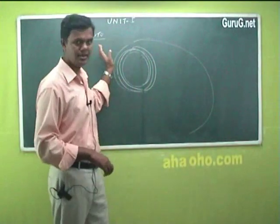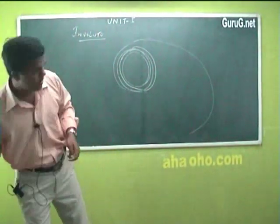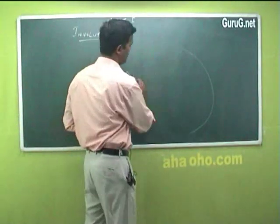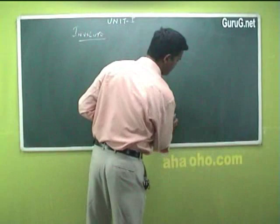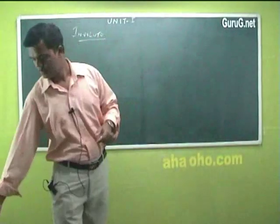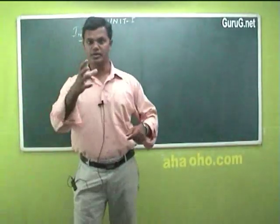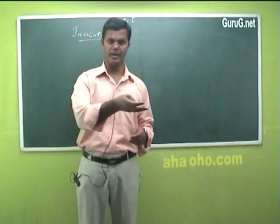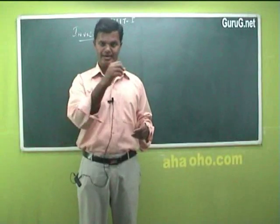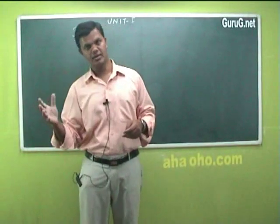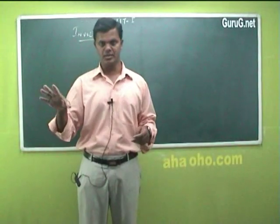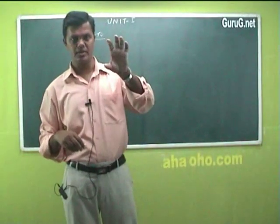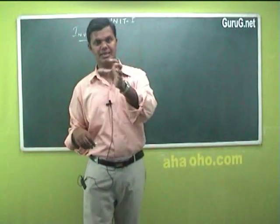It is not compulsory that we draw an involute only for a circular shape. We can have an involute for a polygon also — for example, a triangle, a rectangle, a hexagon, or any number of sides. First we will see what is a circular involute, that is the involute from a circle.